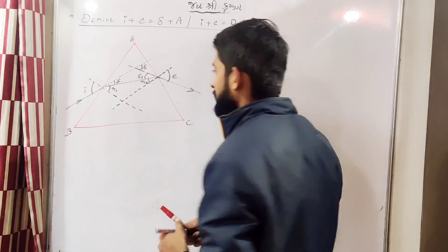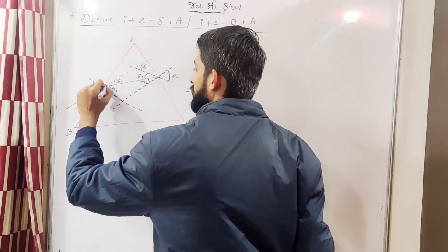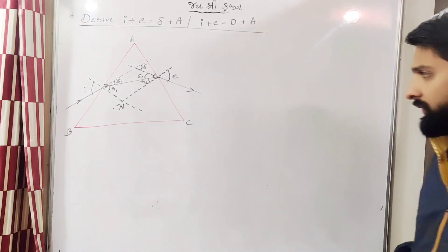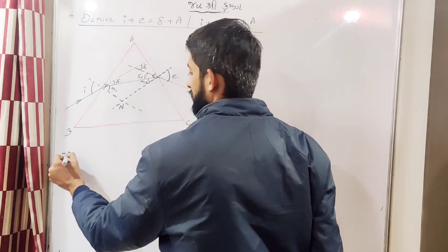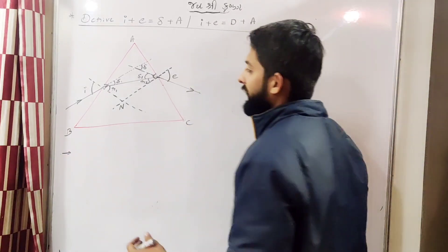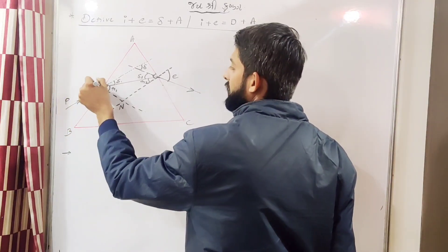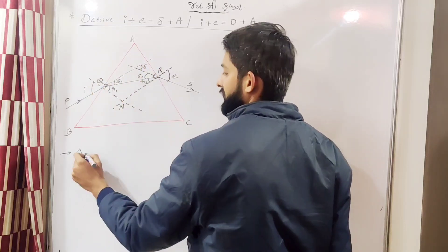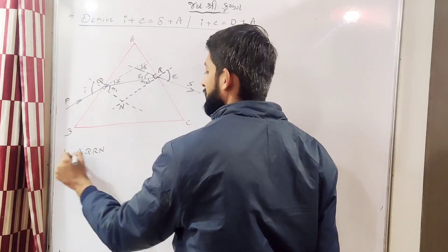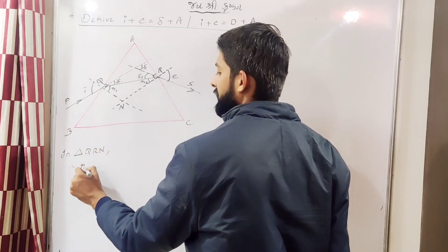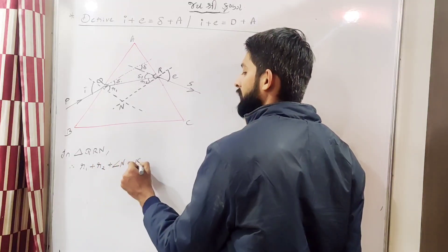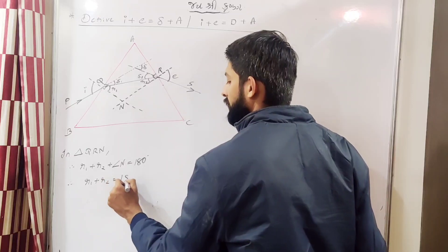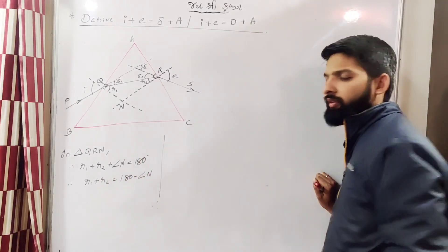So let's mark one angle. See, this is a normal, it will make 90 degree with the surface. Let's say we are having certain angle. Now see, first of all let's consider the points: P, Q, R, S. So consider the triangle Q, R, N. So you can write R1 plus R2 plus angle N that is equal to 180 degree. Therefore you can write R1 plus R2 equal to 180 minus angle N. This is the first equation.